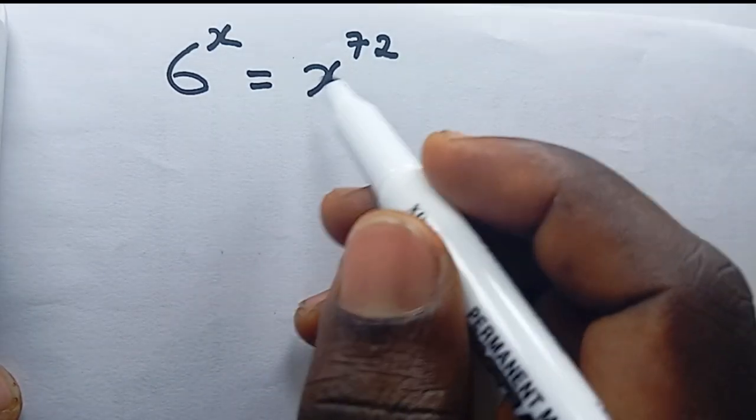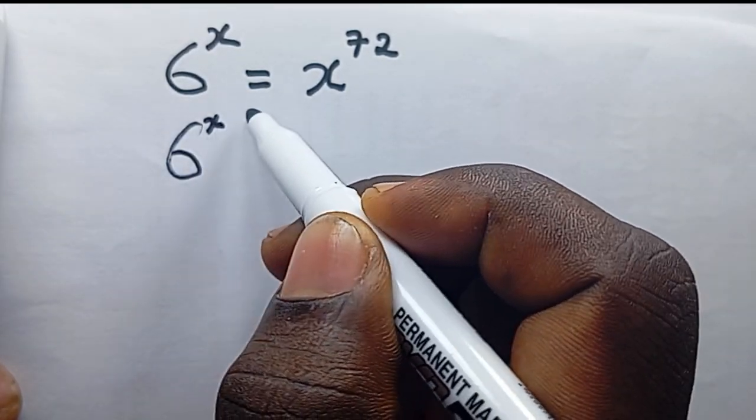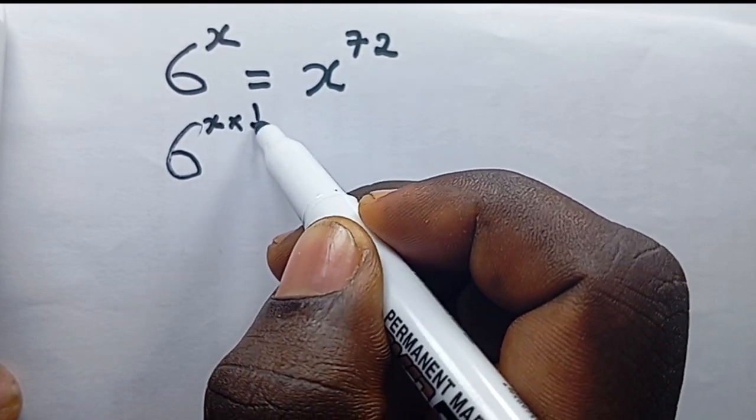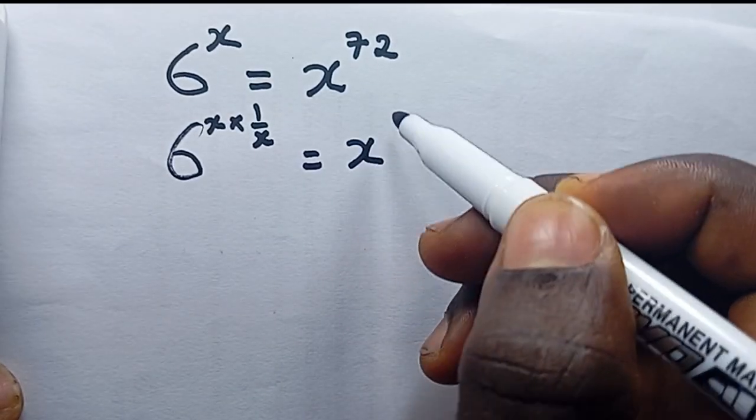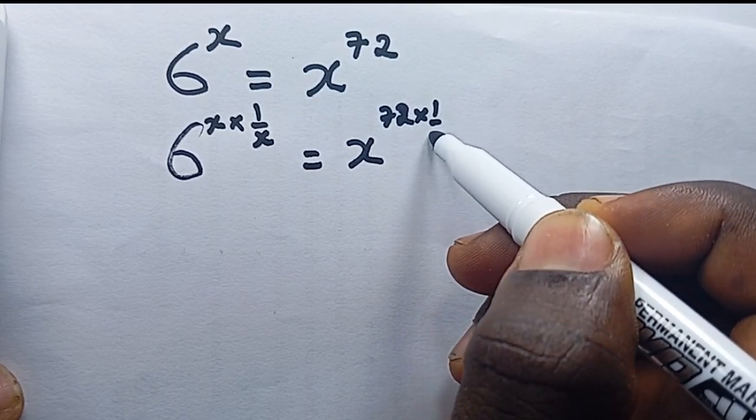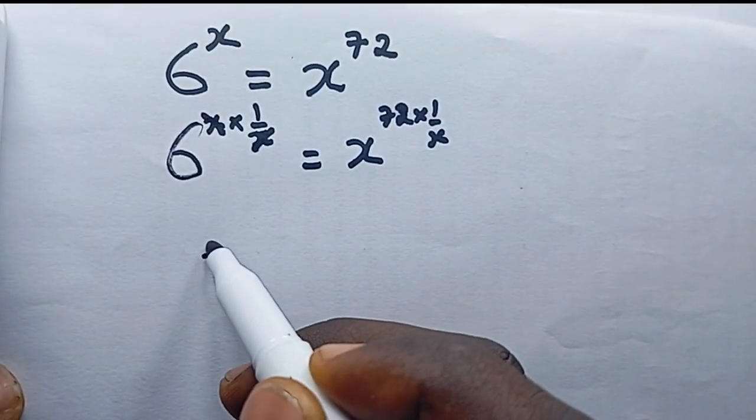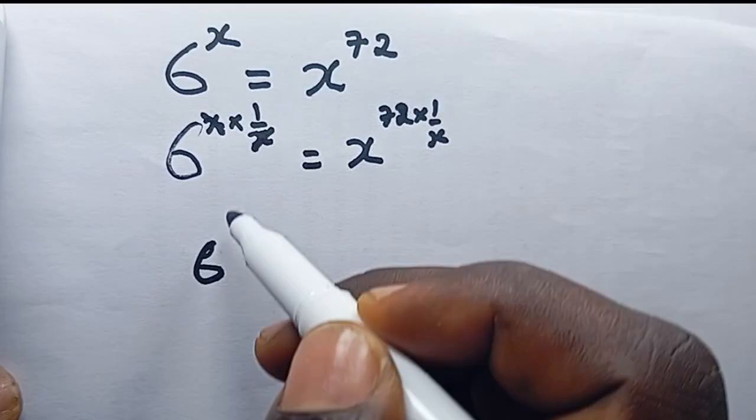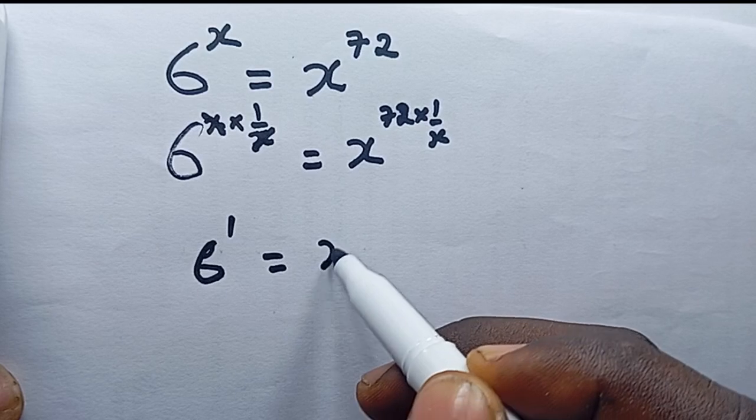The first thing I want to do is multiply both sides by 1 over x. I will do the same on the right hand side, multiply by 1 over x, so that this x is going to cancel and I'm left with 6 power 1 is equal to x power 72 divided by x.